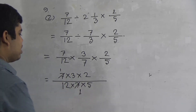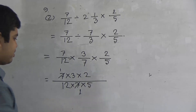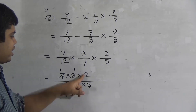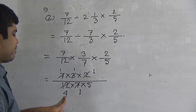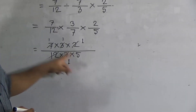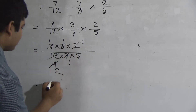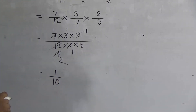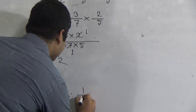Both 7s are cut by 7, giving 1 and 1. Then notice 3 and 12: both are divided by 3. 3 divided by 3 gives 1, and 12 divided by 3 gives 4. Now 4 and 2: both divided by 2. 2 divided by 2 gives 1, and 4 divided by 2 gives 2. Now notice: numerator has 1, 1, 1 left, and denominator has 2 and 5 left. So we multiply: 1 × 1 × 1 = 1 in numerator, and 2 × 5 = 10 in denominator. If we calculate this fraction, then we get 1 by 10 as the answer.